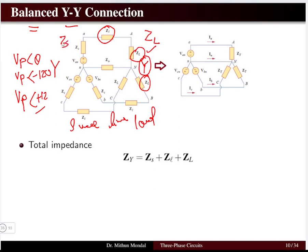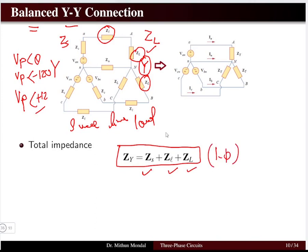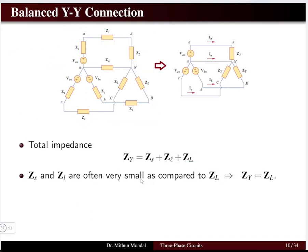The source impedance is represented by Z_S. The total impedance connected in a star is given by the source impedance plus the line impedance plus the load impedance — this is the single-phase equivalent of the three-phase star-star connection. Generally, the source impedance and line impedance are very small, so the total impedance of the star connection is essentially due to the load impedance alone.